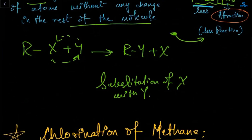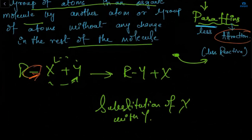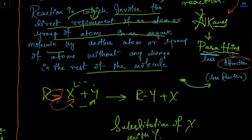Here is an example with a single bond, which means saturated. Here R is combined with element X, and when it reacts with Y, we see displacement of Y and X — the direct replacement or substitution of X with Y. Here X was there, and after the reaction Y takes the place of X. This is the substitution of X with Y.